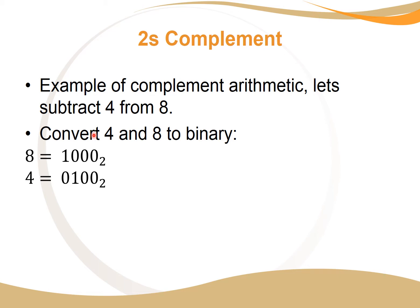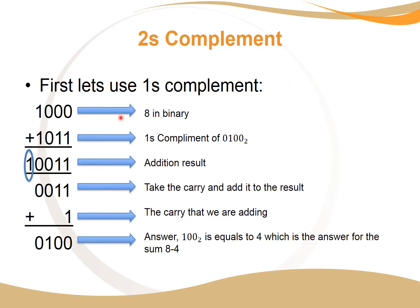Now let's look at an example of complement arithmetic — subtracting four from eight. First, we convert four and eight to binary: 1000 is eight in binary, and 0100 is four in binary. I've added a leading zero so that all numbers being added and subtracted have the exact same number of bits, which makes subtraction easier. Now for ones complement: this is the binary number of eight, and this is the ones complement of four — we change the zeros into ones and the ones into zeros, then we just add.